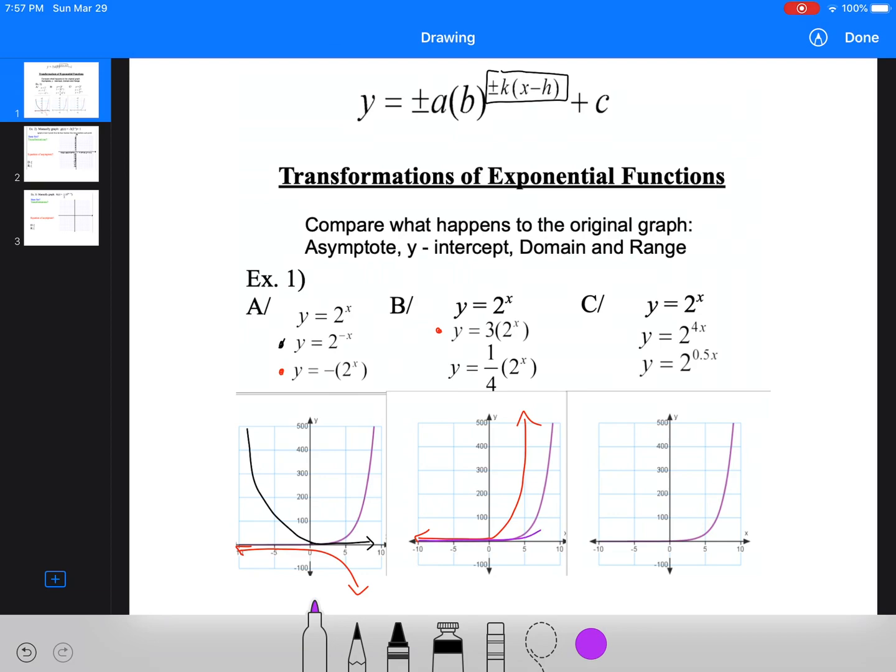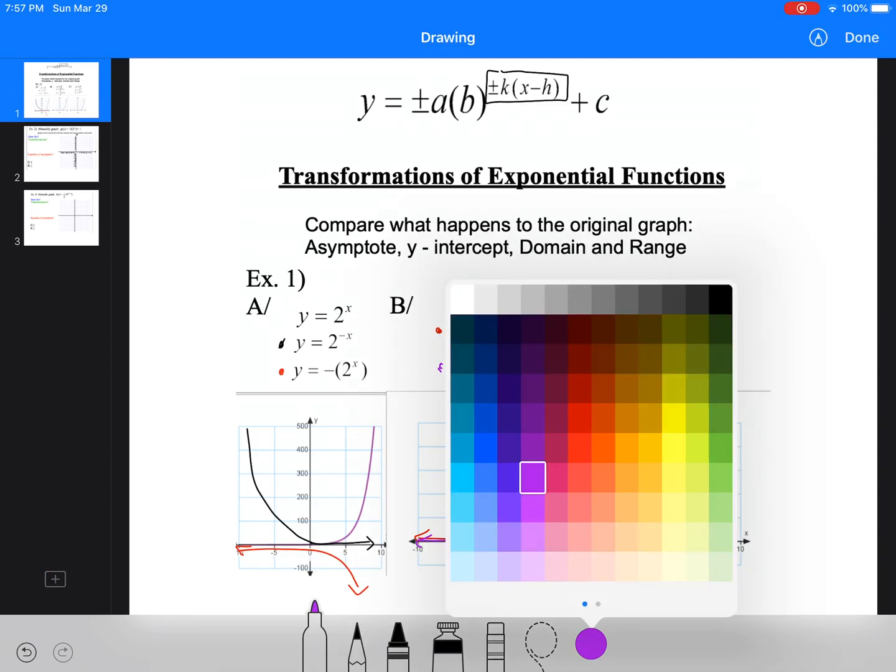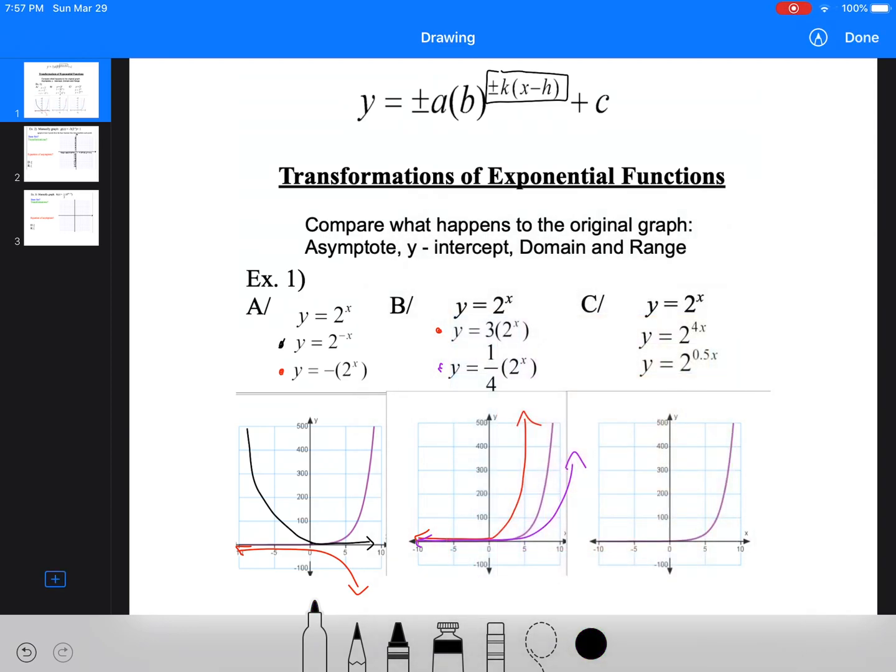With the a value being a fraction, we would do the same thing, but it's going to be going up slower. What's going to change is the y-intercept, because when I make x equals zero, typically the y-intercept is one. Here we're multiplying one by three, and then multiplying one by one quarter. So the y-intercept for the red graph would be three, and the y-intercept for the purple graph would be a quarter, because two to those zero gives us one, so we're just multiplying it by our a value. Our a value actually tells us what our y-intercept is.